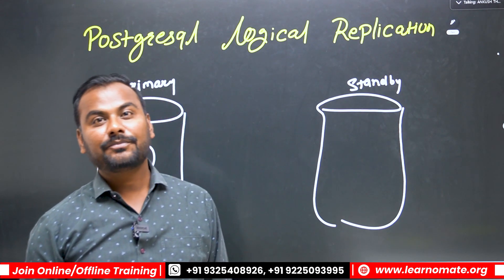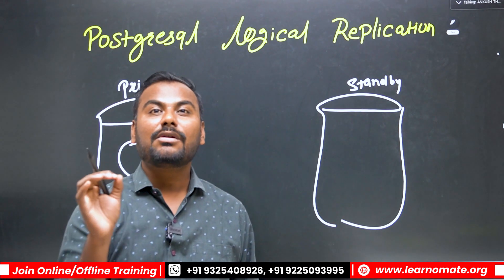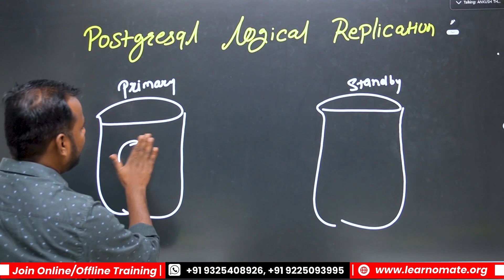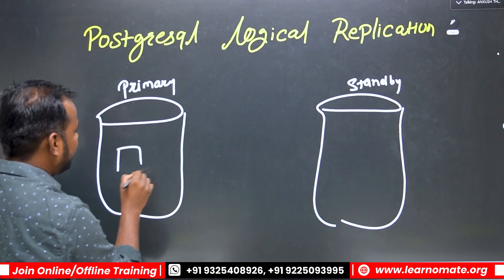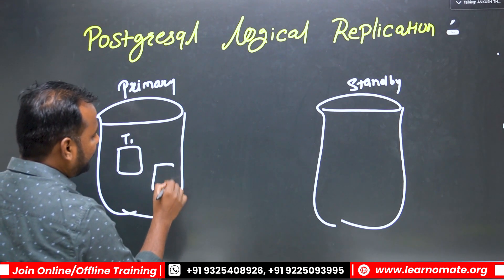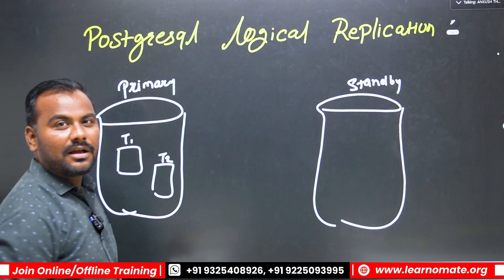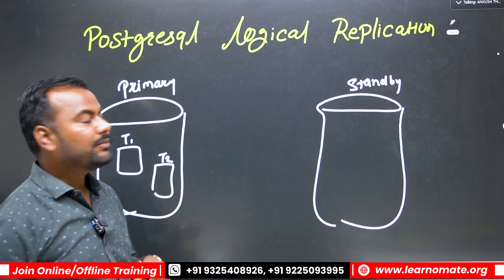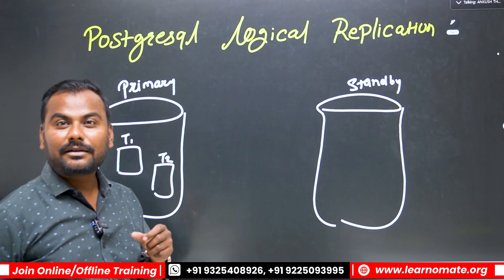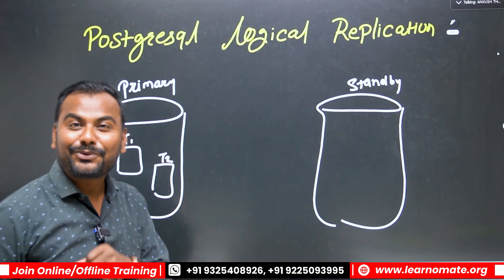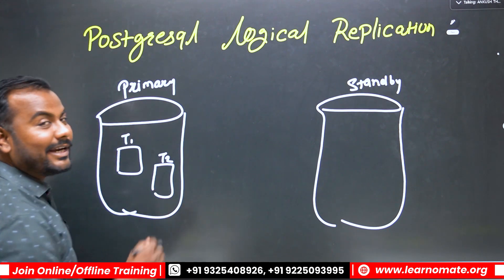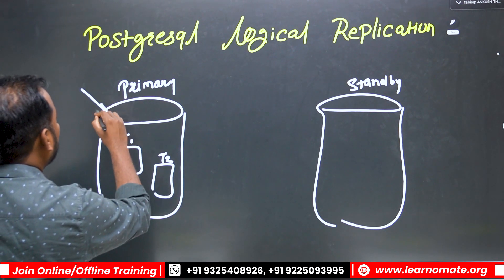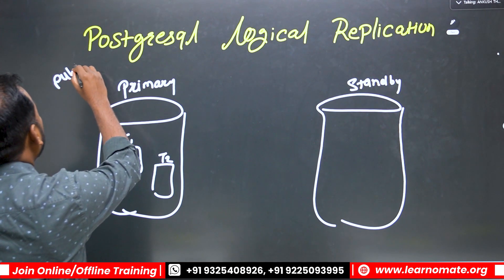But in logical replication, you can define which tables you want to replicate. For example, let's say I have created tables t1 and t2 here, and I just want to replicate these two tables. To do this, we are going to create a publisher — we call this node the publisher.